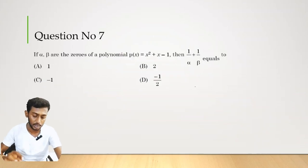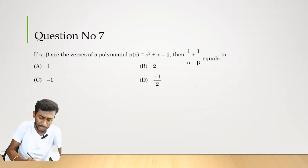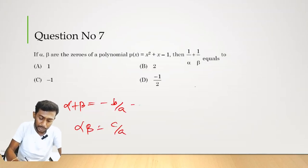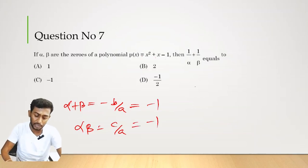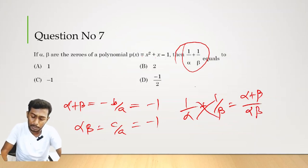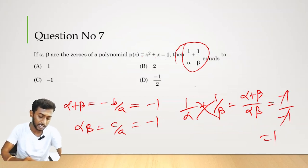Question number 7. Alpha and beta are the zeros of the polynomial p(x) = x² + x − 1. Sum of zeros: α + β = −b/a = −1. Product of zeros: αβ = c/a = −1. Find 1/α + 1/β = (α + β)/(αβ) = (−1)/(−1) = 1. Therefore option A is the correct answer.